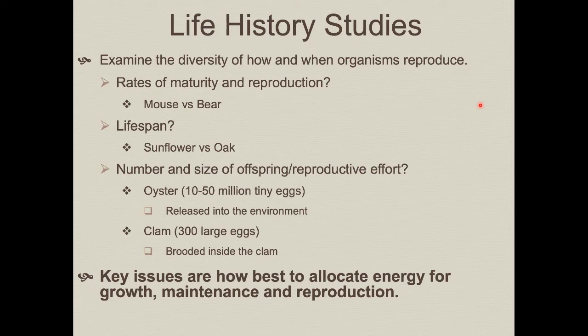What about lifespan? Why are there plants that are annuals, like a sunflower that only lives for one year, versus an oak tree that can live for centuries? And what about the size of offspring or the amount of reproductive effort per individual offspring? An individual female oyster can produce 10 to 50 million tiny little eggs, releasing these into the environment. Most won't make it, but some do. The key is you're not putting a lot of investment in any one, but if you produce enough, there's a good chance that some will survive.